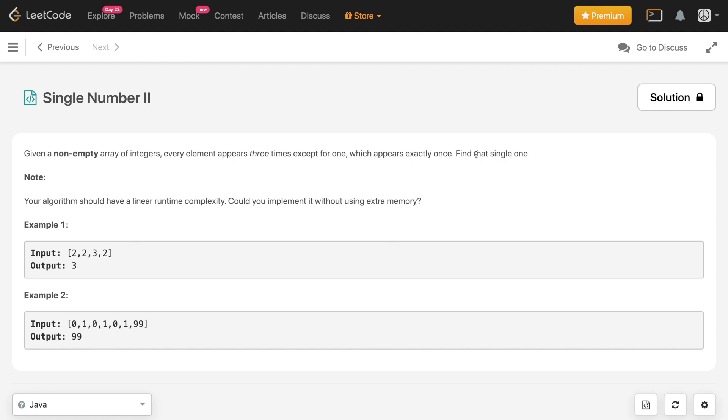So let us consider an example first. In the first example, 2 is present three times and 3 is present uniquely, so we return 3. In the second example, 0 and 1 are present three times and 99 is the unique element, so we return 99.